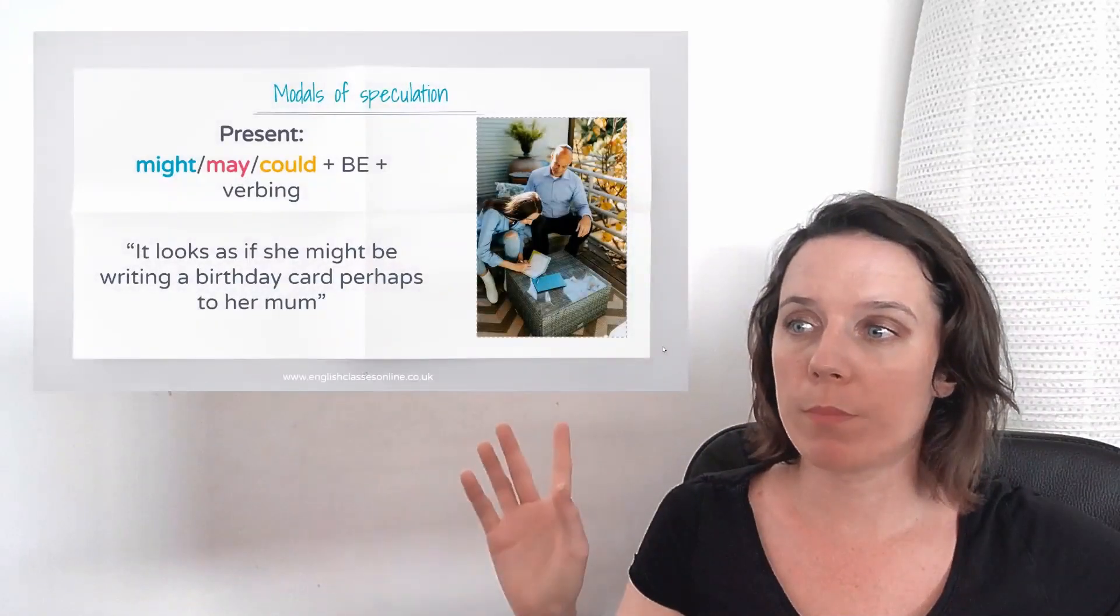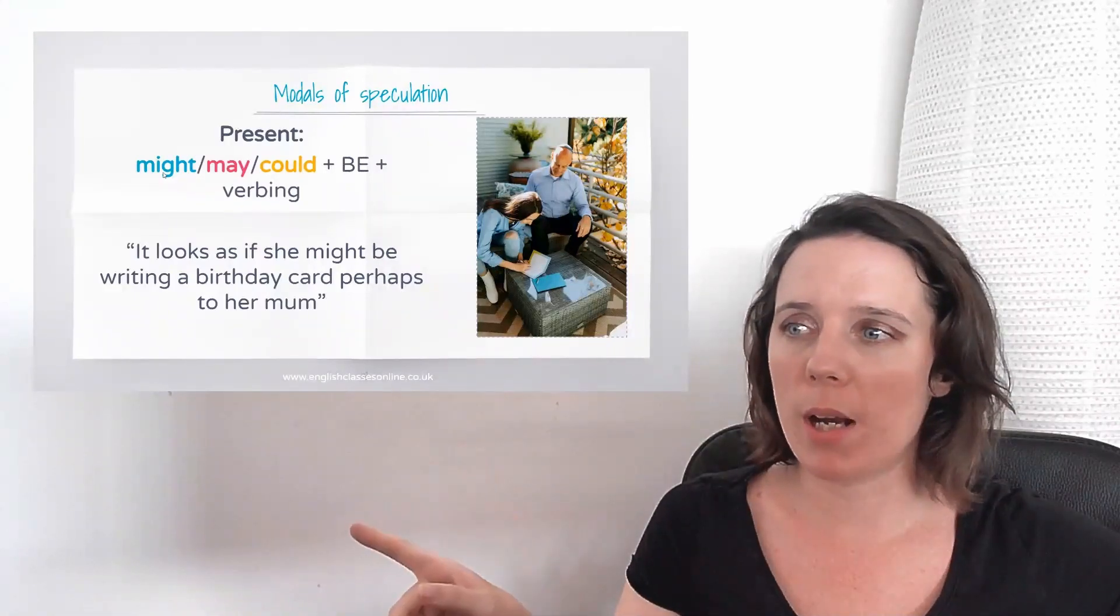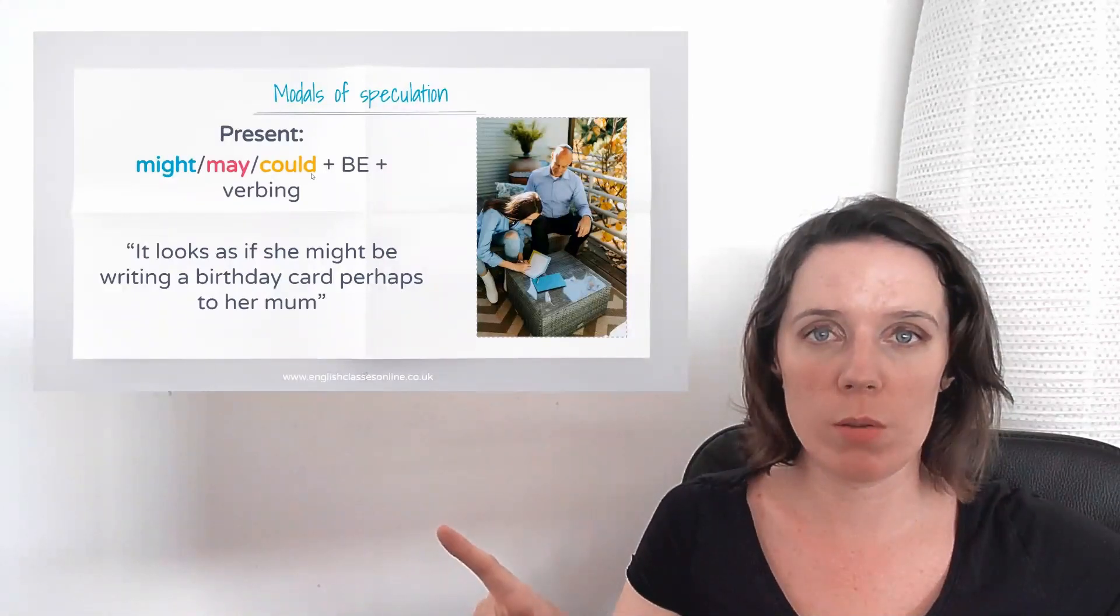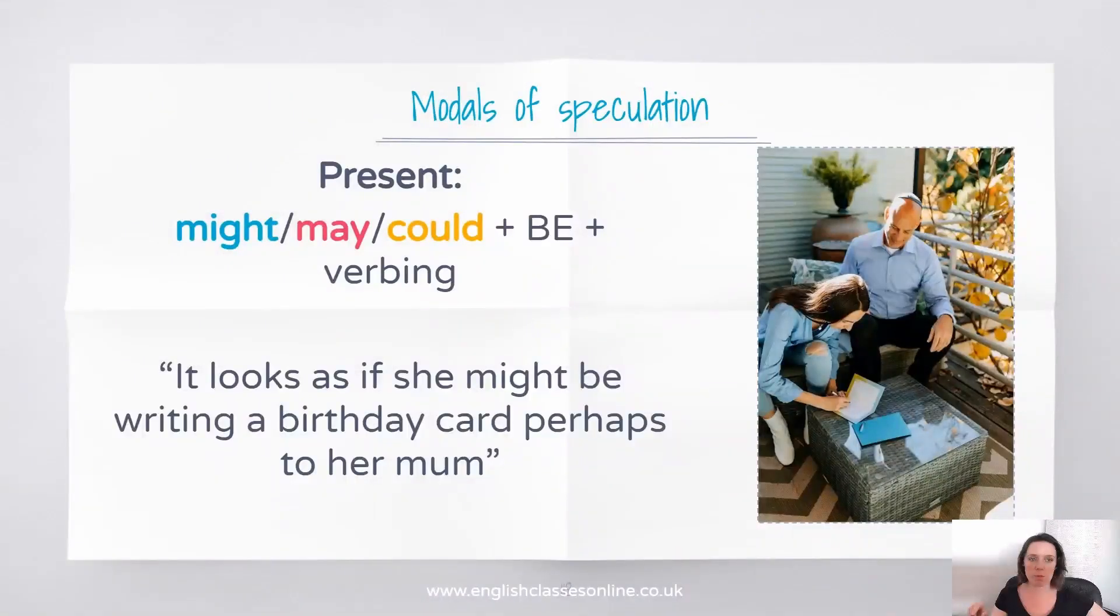So your modals of speculation. In the present, you can use might, may, or could, would be, and a verb an ing. So if we're describing this photo here, it looks as if she might be writing a birthday card, perhaps to her mum. So we've got might, be, and a verb an ing. That is to describe something happening in the present or to speculate about something happening in the present.